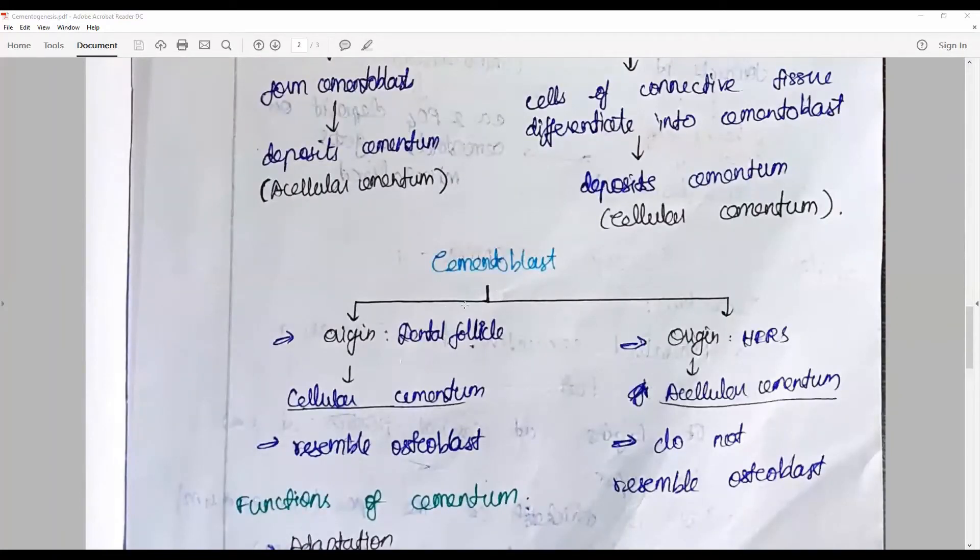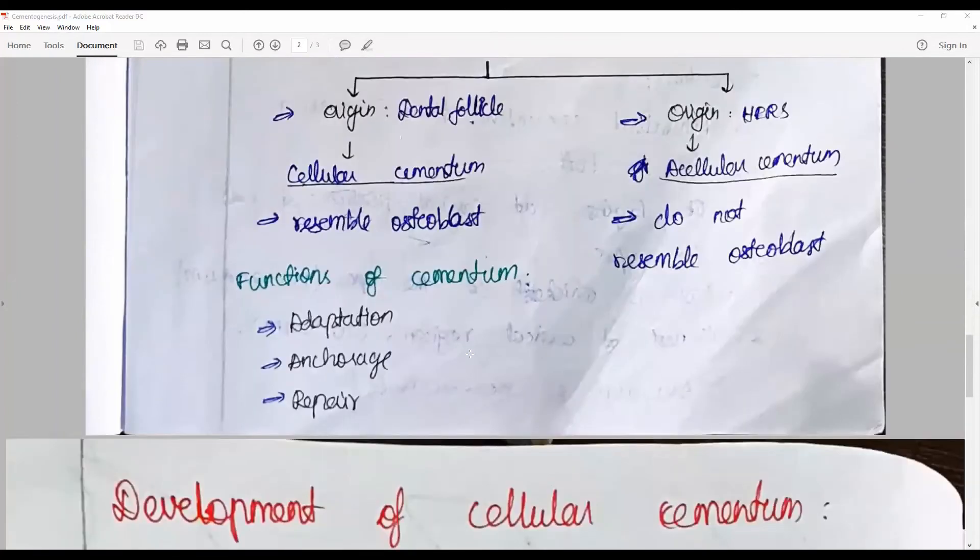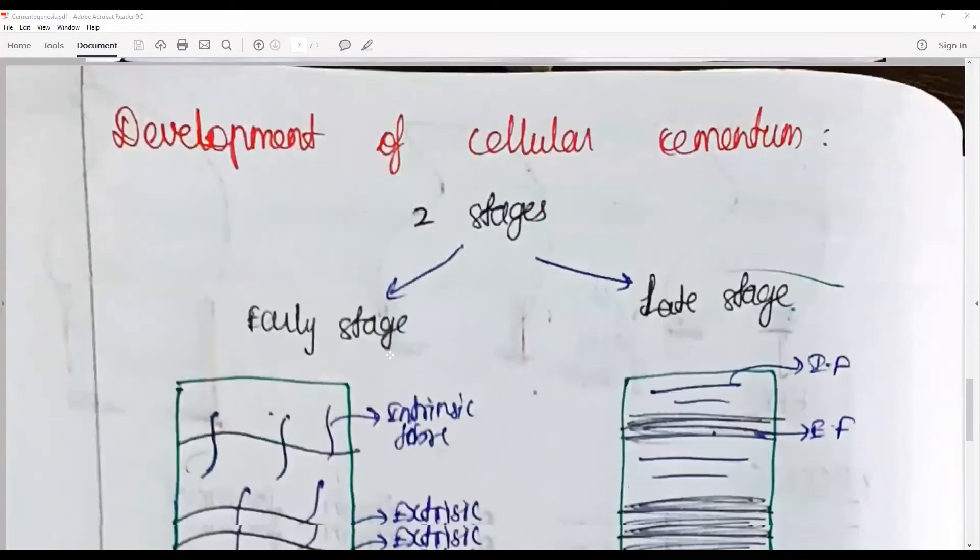So cementoblasts are essentially from dental follicle or HERS. HERS produces acellular cementum and they do not resemble osteoblasts, whereas cellular cementum-secreting cementoblasts resemble osteoblasts. The functions of cementum include adaptation, anchorage, and repair.